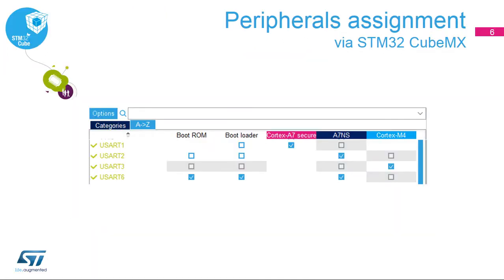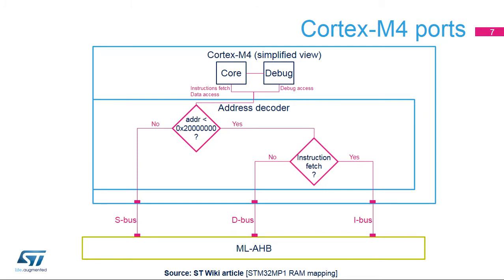This screenshot shows an example of the assignment as it can be done with the STM32CubeMX tool, where the STM32MP15 is assigned to the Cortex-A7 Secure for OP-TEE. Note that this diagram shows STMicroelectronics' recommendations or choices of assignment for the STM32MPU embedded software distribution. Additional possibilities might be described in the STM32MP15 Reference Manual. Note the two columns on the left used for USART6 — the boot ROM column allows the ROM code to be able to boot from this instance. This slide focuses on Cortex-M4 support by the ROM code.